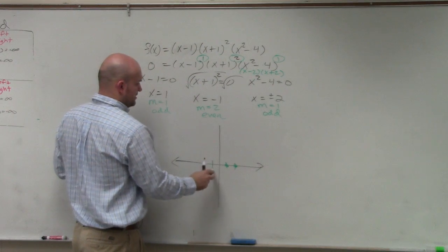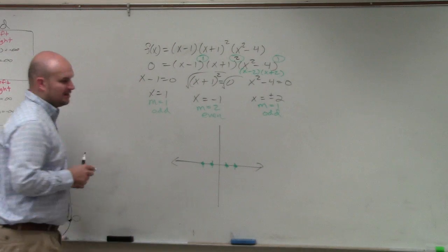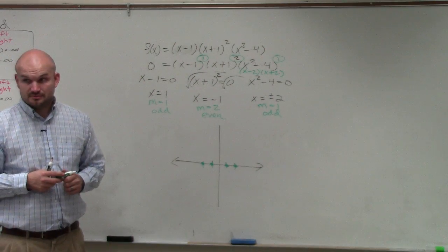And we have zeros at, wait a minute. We have 1, sorry, negative 1, 2, and negative 2. Would everybody agree with me? Those are all my zeros.